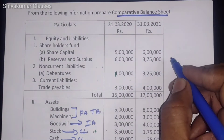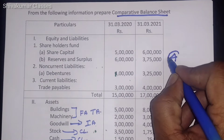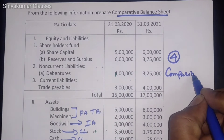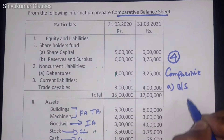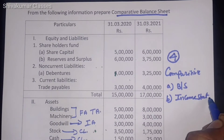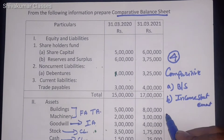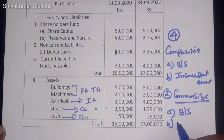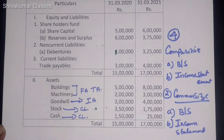As per this chapter, overall 4 different problems we need to work out. 2 are based on Comparative — first one is Balance Sheet and the second one is the Income Statement. And similarly, the second type is Common Size — under this, once again first one is on Balance Sheet and second one is on Income Statement. Out of these 4, definitely one question will be there in the final examination.